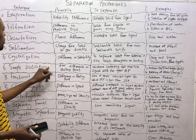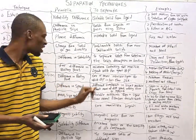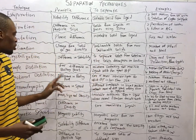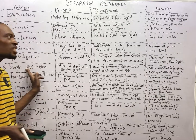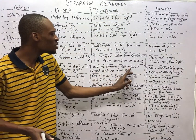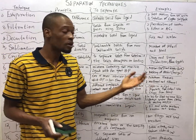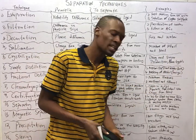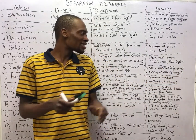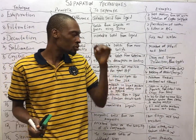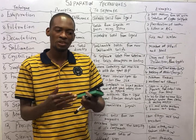Simple distillation and fractional distillation both work on the principle of difference in boiling point. When you have a mixture with components that differ in boiling point, you use distillation. If you have two components with far apart boiling points, you use simple distillation. Simple distillation is used to separate a mixture containing two miscible liquids with far apart boiling points. An example is acetone at 56°C and water at 100°C — there is a wide difference, so we use simple distillation. In making local gin or alcohol, we apply simple distillation.